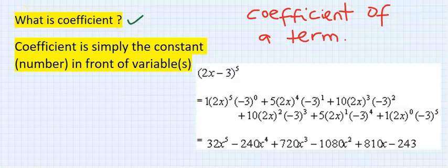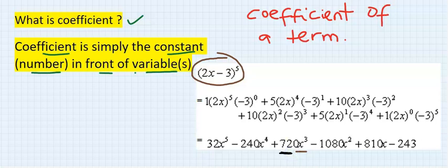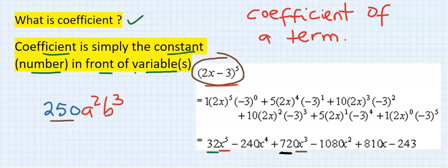What is a coefficient? A coefficient is simply the constant — the number in front of a variable. If we are given this binomial expansion to find the coefficient of x to the power of 3, the answer is 720. If we are asked to find the coefficient of x to the power of 5 in this expansion, the answer is 32. It simply means the number in front of a variable; the number in front of h squared b cubed is 250.